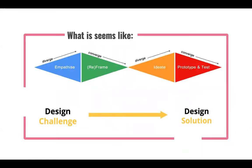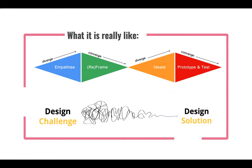Design Thinking involves both divergent and convergent thinking. When you explore the problem, you think as broadly as possible — you diverge. When you reframe it, you converge. When you ideate, you diverge. And when you prototype and test, you converge again. It is not as simple as it sounds — most of the time it's very messy. It's not as pretty as the diagram, but the diagram is a good way for us to understand the design thinking process.